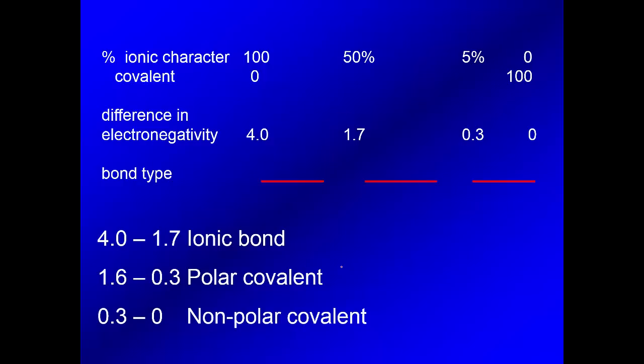So we have kind of a scale, and we say that if the difference between the two elements falls in the range of 4.0 and 1.7, we would classify that as an ionic bond. Because look what this is meaning. This means that it's very, very uneven. That there's a big electronegativity difference. So this again is a large electronegativity difference.